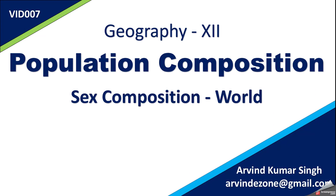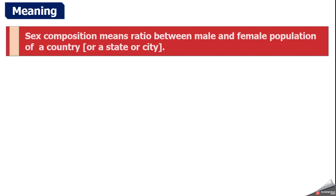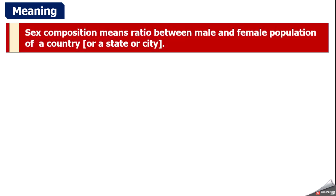The chapter is Population Composition and the topic is sex composition, also called sex ratio. Sex composition means the ratio between male and female population of a country, state, or city.